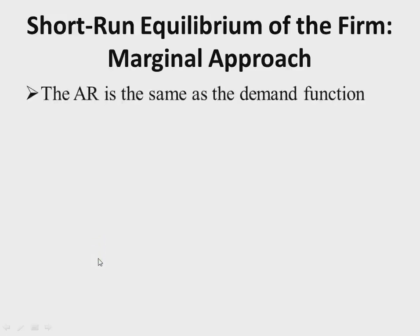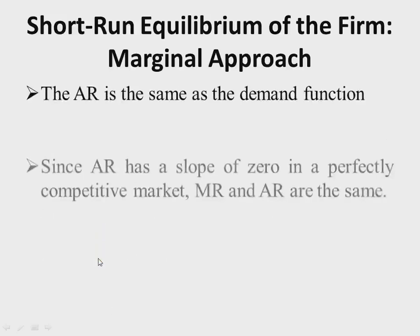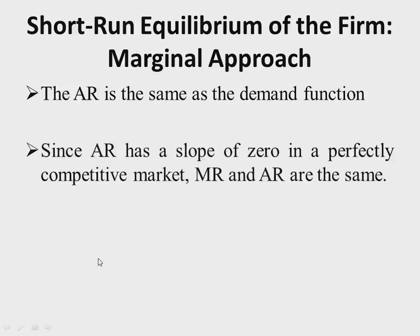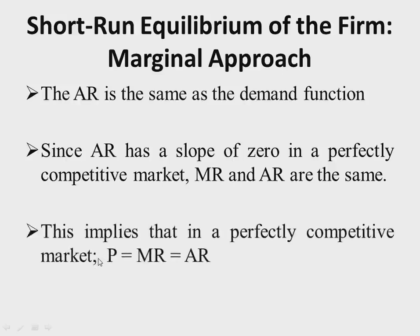The average revenue is the same as the demand function. Since the average revenue has a slope of zero — it is horizontal in the perfectly competitive market — marginal revenue and average revenue are the same. Therefore, in a perfectly competitive market, price = marginal revenue = average revenue.